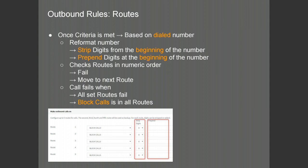The PBX also has the capability to reformat the outgoing number before sending it to the provider. It will begin by stripping any digits required from the start of the number. When selecting the value of digits to strip, you are selecting how many numbers to take away from the beginning of the dialed number. After the stripping has been performed, the PBX will prepend any digits you require at the beginning — you will choose the actual values of the digits to prepend, not how many.